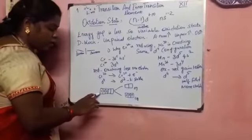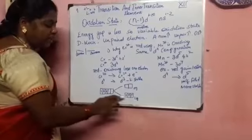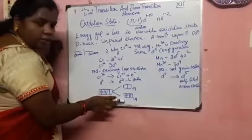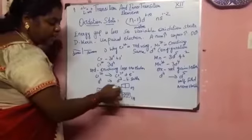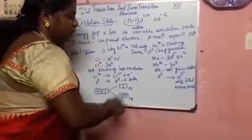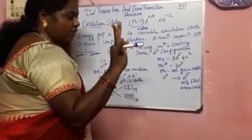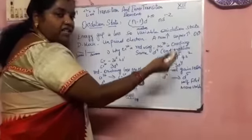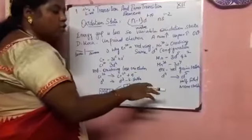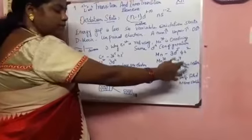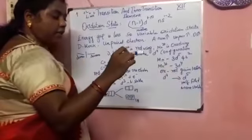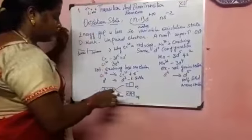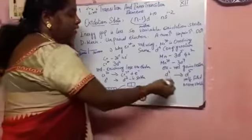For manganese Mn³⁺ with d⁴ configuration, acting as an oxidizing agent means it gains one electron and is reduced. Gaining one electron converts d⁴ to d⁵. Since d⁵ has 5 orbitals — an odd number — it has a half-filled configuration with all unpaired electrons. Comparing d⁴ and d⁵: d⁵ is more stable because of the half-filled stability. That is why chromium acts as a reducing agent and manganese acts as an oxidizing agent.